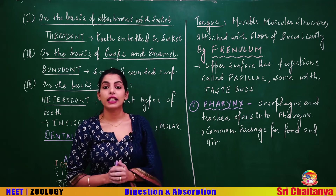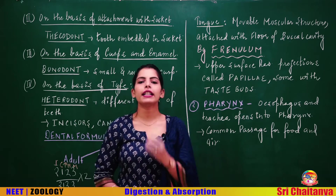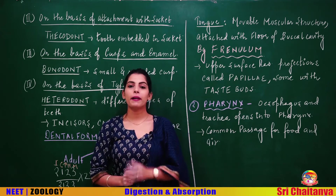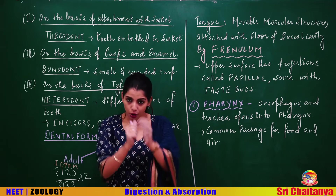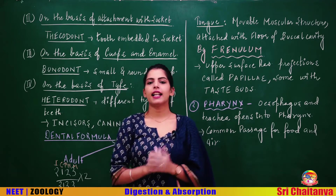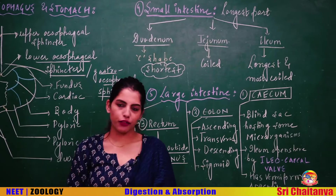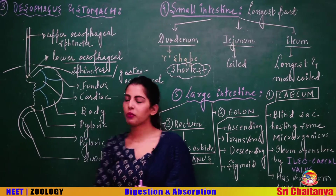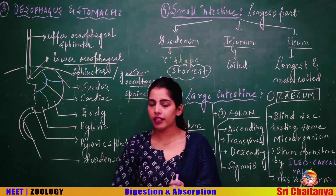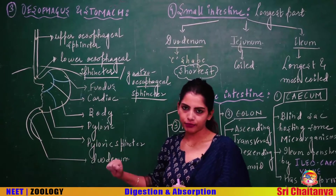Moving to the next part of the alimentary canal — the pharynx. Both the esophagus and trachea open into the pharynx, which means the pharynx is a common passage for food as well as for air. The next parts we will discuss together are pharynx leading to esophagus, and esophagus leading to stomach.